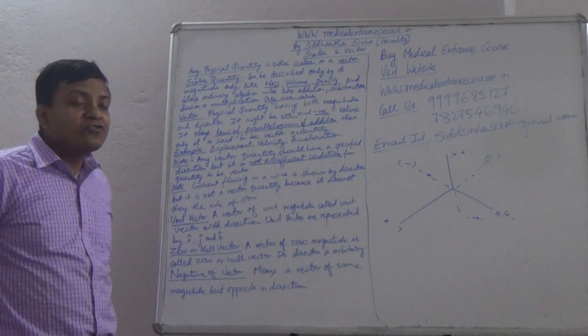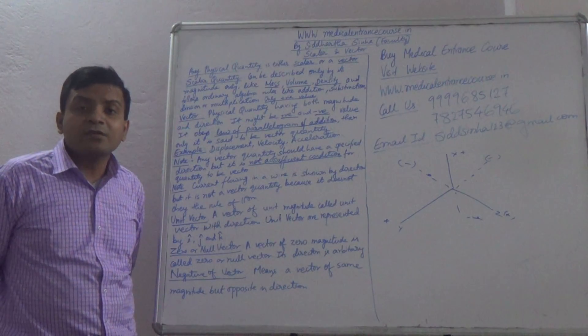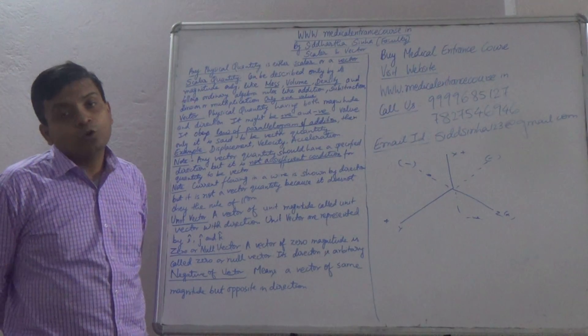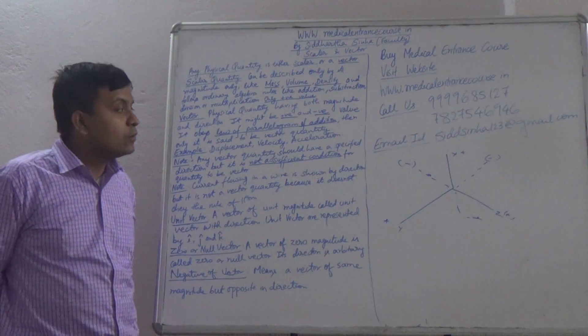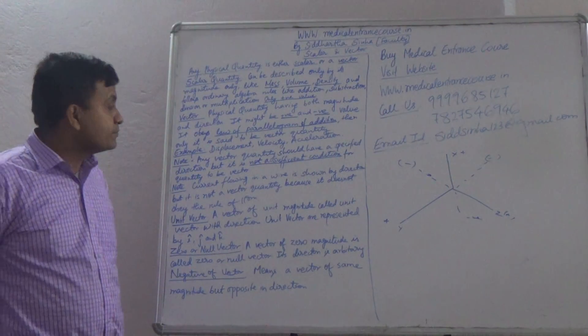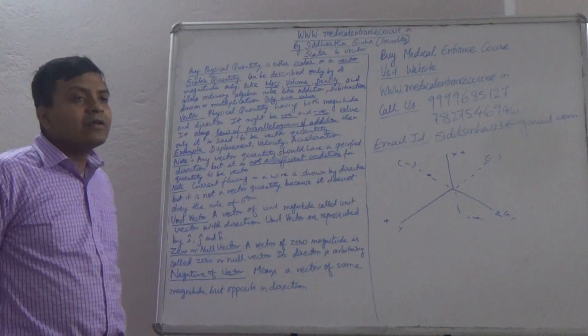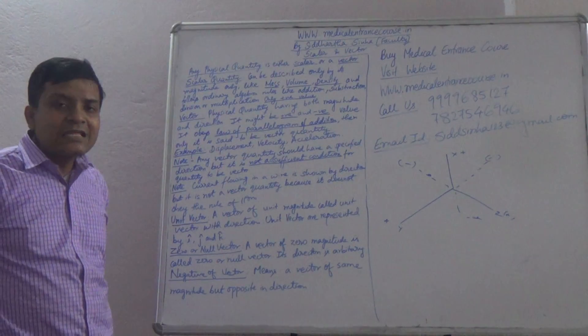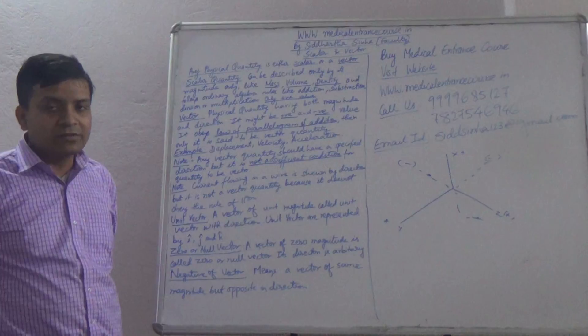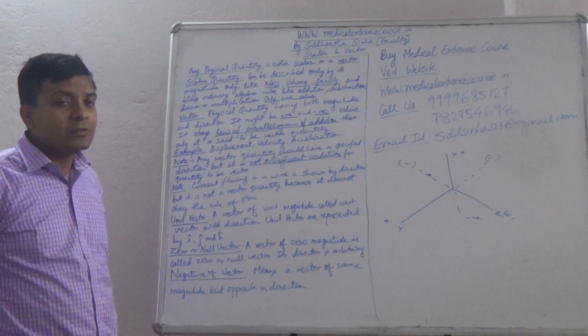And the condition is that in order to be called a vector quantity, it must follow the rule of parallelogram or it must obey the rule of parallelogram addition. Examples are displacement, velocity, acceleration, which are all vector quantities. We got here a specified direction.